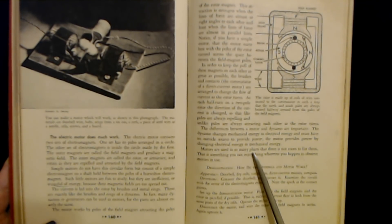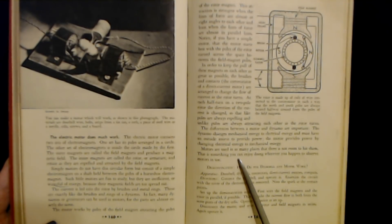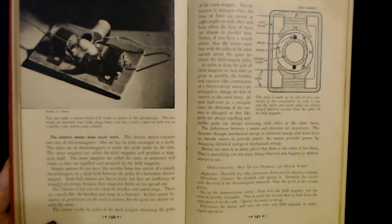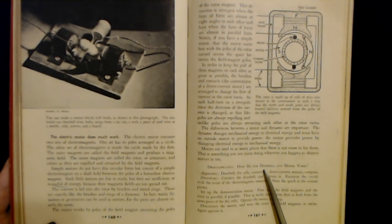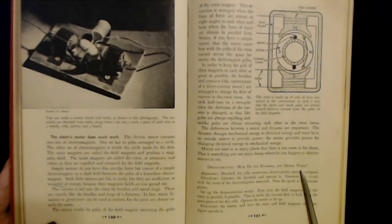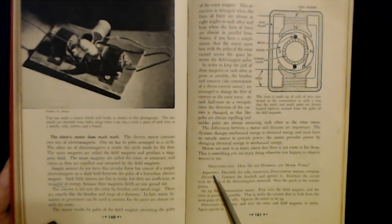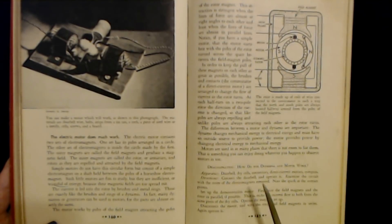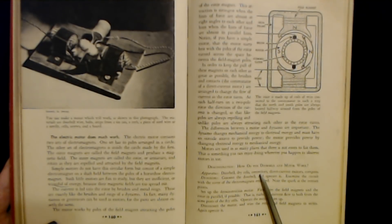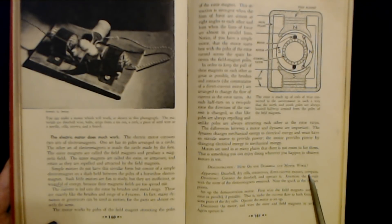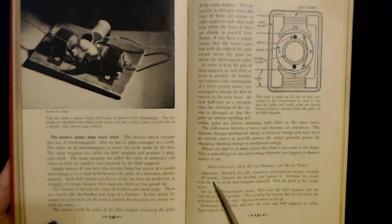Motors are used in so many places that there is not room to list them. That is something you can enjoy doing wherever you happen to observe motors in use. As a demonstration, how do the doorbell and motor work? For an apparatus, you need a doorbell, dry cells, connectors, direct current motors, and a compass. And then you have directions for this.